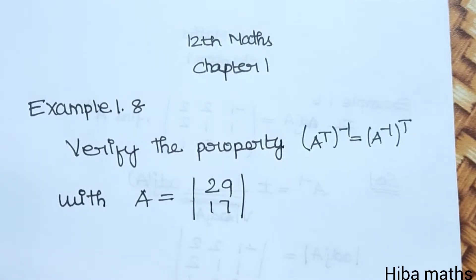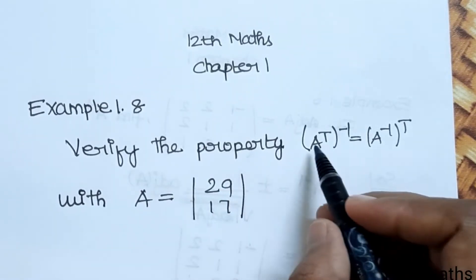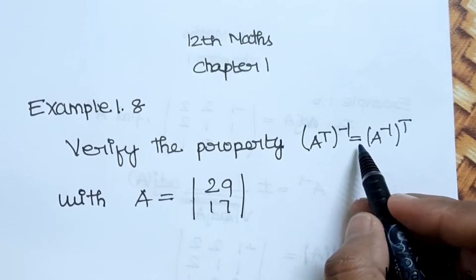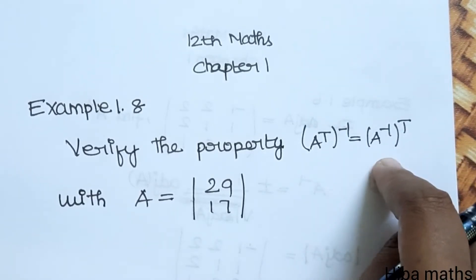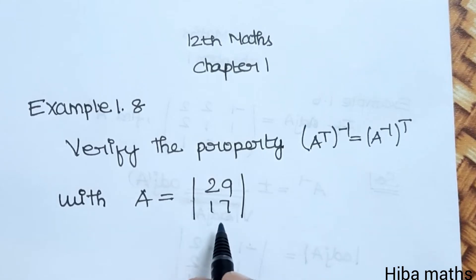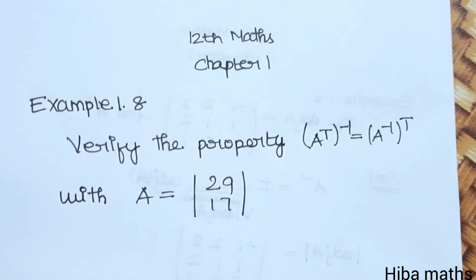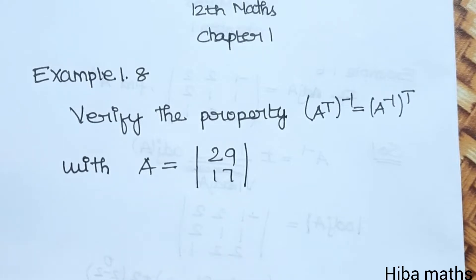Hello students, welcome to Hiba maths. 12th Standard Math, Chapter 1, Example 1.8. Verify the property: A transpose whole inverse is equal to A inverse whole transpose. This is a very easy property and a 2 by 2 matrix is very easy.